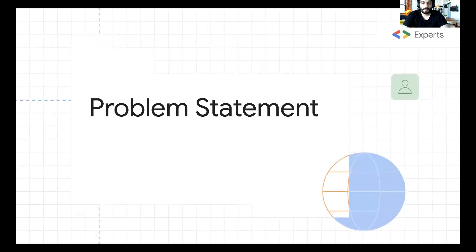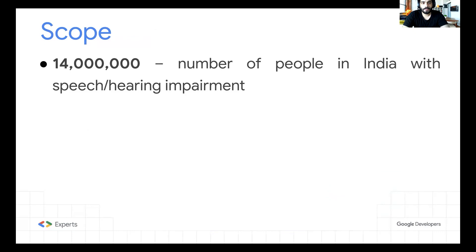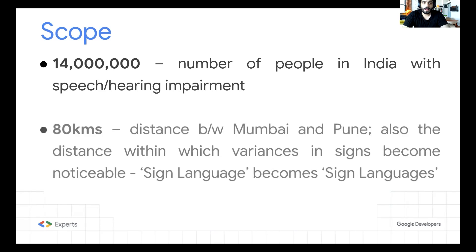Now we're defining our problem statement. I did some initial research about 16 months back about the scope of our project. What I realized is that 40 million people in India are currently suffering from speech and hearing impairment. 80 kilometers is the distance between Mumbai and Pune, two major cities in Maharashtra — the places where I work and live respectively. And within 80 kilometers, the sign language has very significant changes.